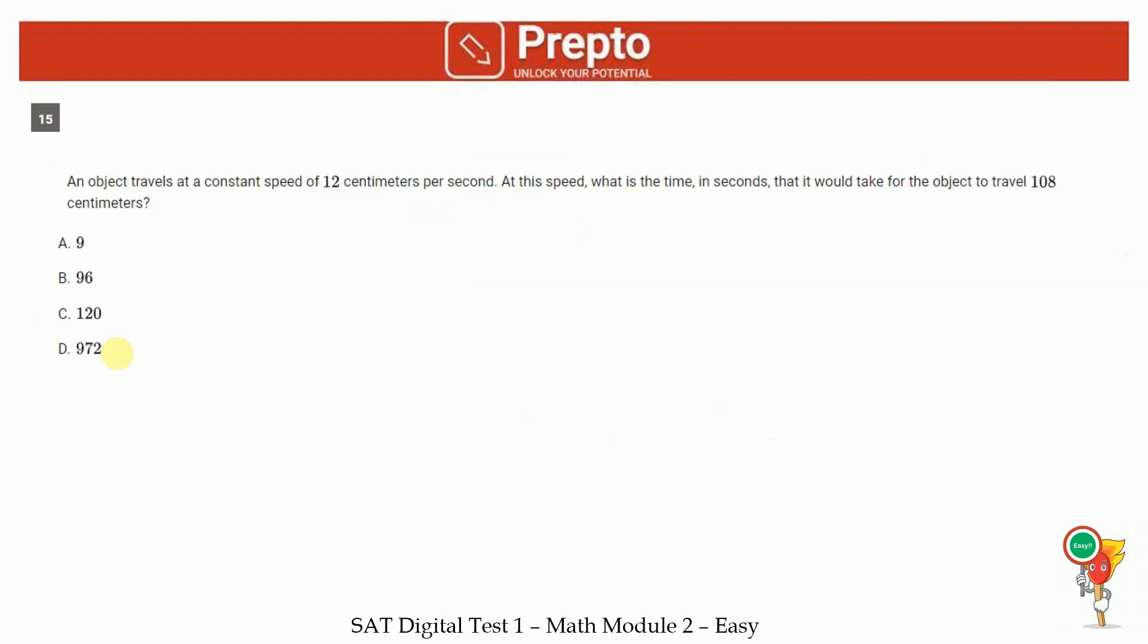15th question. An object travels at a constant speed of 12 centimeters per second. At this speed, what is the time that it would take for the object to travel totally 108 centimeters? That would be 108 divided by 12, which is 9. Answer is 9 seconds, option A.